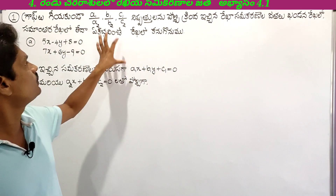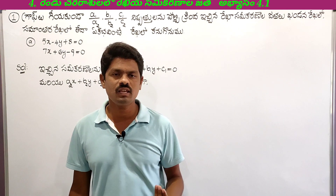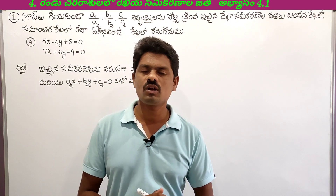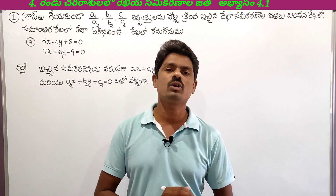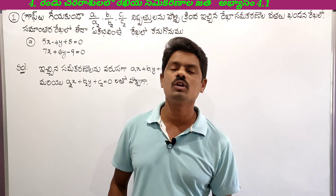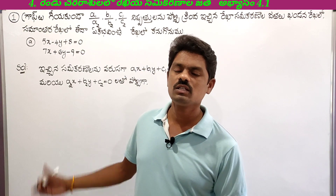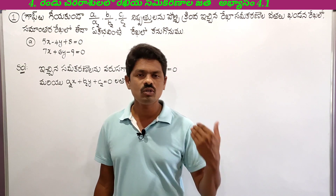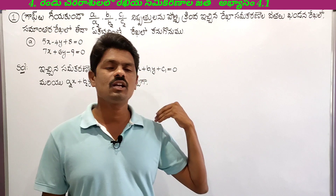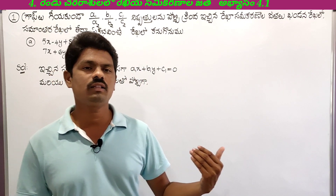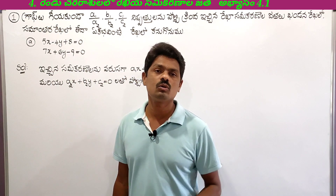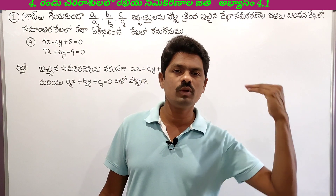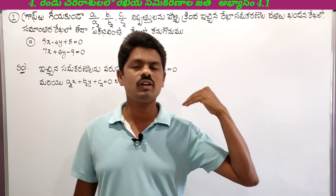We check the ratios A1 by A2, B1 by B2, and C1 by C2. If A1 by A2 is not equal to B1 by B2, that gives us one condition. Also checking if A1 by A2 is not equal to C1 by C2.